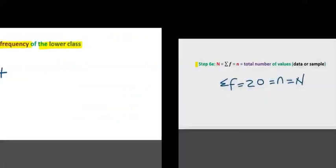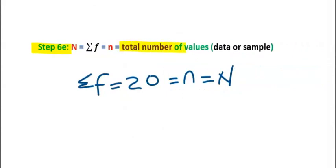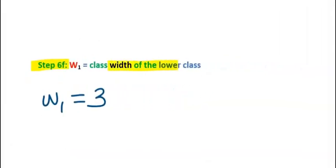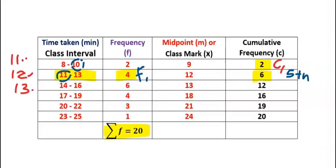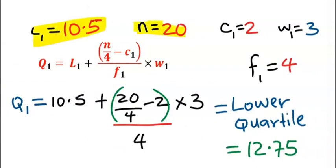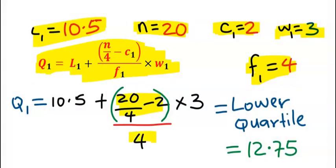Step 6E: the total number of the sample N is 20, obtained from the summation of frequency in the table. Step 6F: the class width of the lower class is 3, that is 11, 12, and 13. Having obtained L1=10.5, N=20, C1=2, W1=3, and F1=4, we substitute into the lower quartile formula. Solve N over 4 first, multiply by 3, then add to 10.5. Our answer is 12.75.